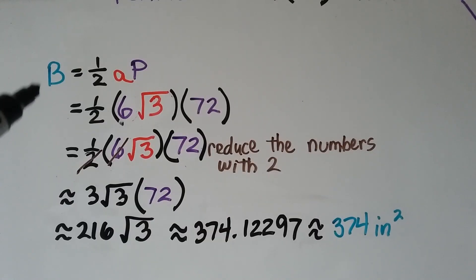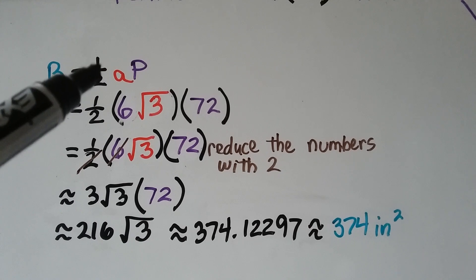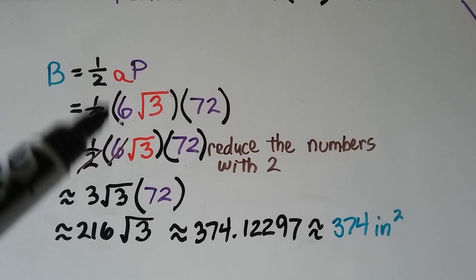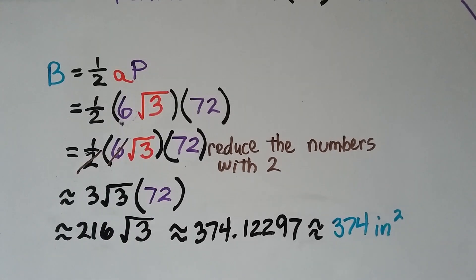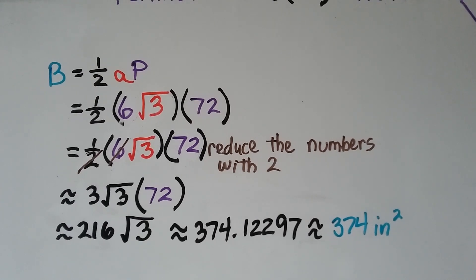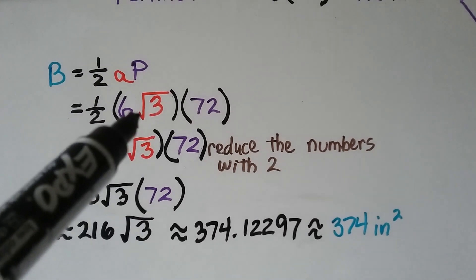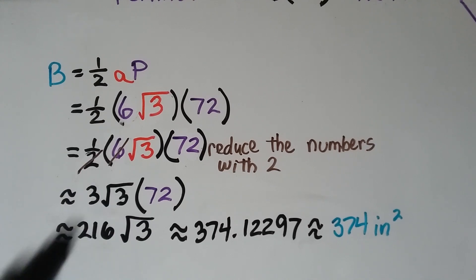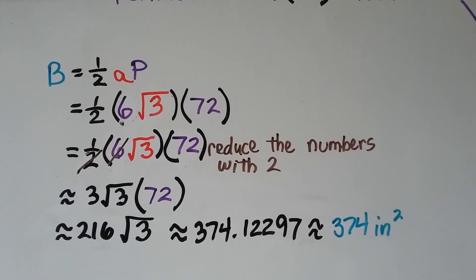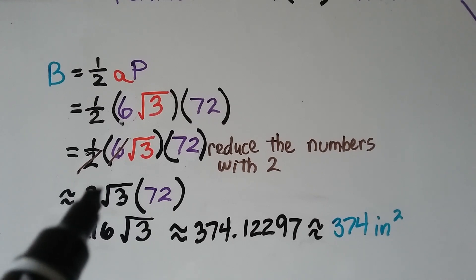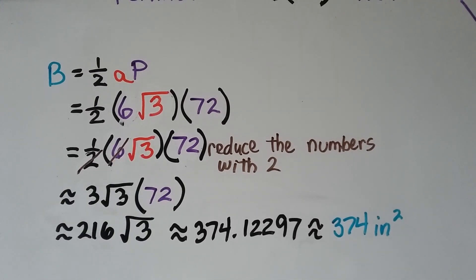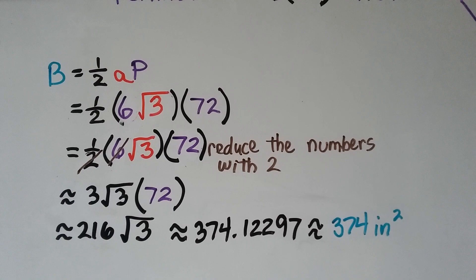To find the base area: B equals one-half times the apothem times the perimeter. The apothem is 6√3 and the perimeter is 72. We can cancel the 2 with the 6, getting 3√3 times 72, which equals 216√3. On a calculator, this gives a long decimal that we round to approximately 374 square inches.